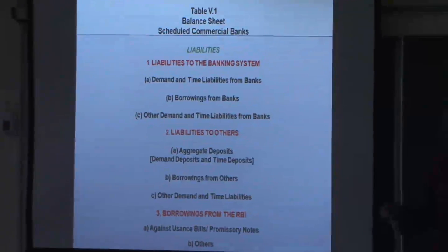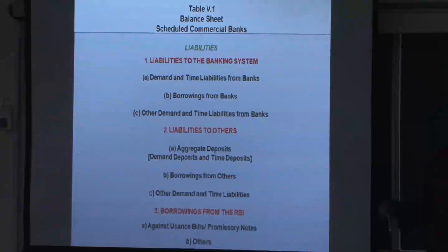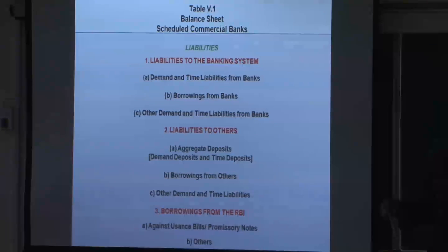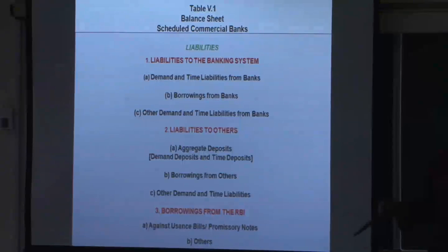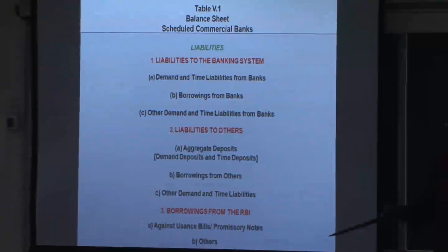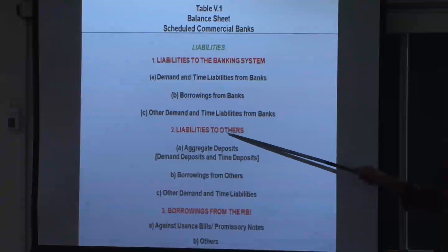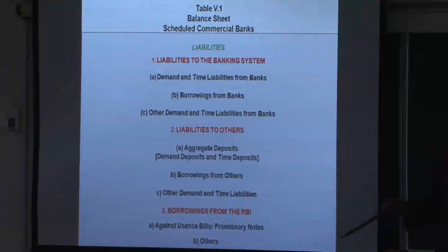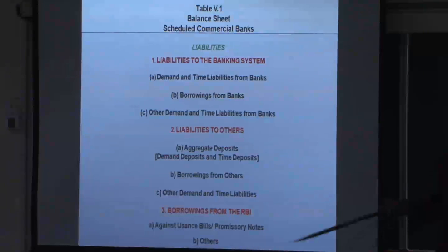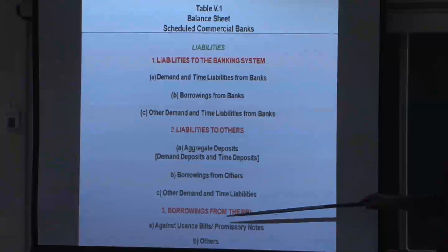For example, if State Bank keeps some money with Punjab National Bank, it becomes a liability for Punjab National Bank because it is State Bank's money — and since State Bank's money is there, it is State Bank's asset. So when we come to assets, it will appear again. Then you have liabilities to others, which is the big amount because this represents the deposits we keep.